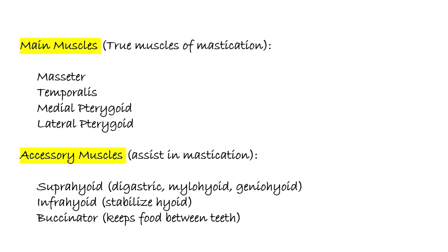There are four main muscles of mastication: masseter, temporalis, medial pterygoid, and lateral pterygoid. Besides these, accessory muscles like digastric, mylohyoid, and buccinator assist indirectly in chewing.